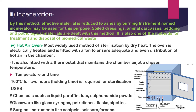The next method is the hot air oven, which is the most widely used method of sterilization by dry heat. The oven is electrically heated and has a fan to ensure adequate and even distribution of hot air in the chamber. It is fitted with a thermostat to maintain the chamber air at a chosen temperature. The temperature and time required is 160°C for two hours as the holding time.